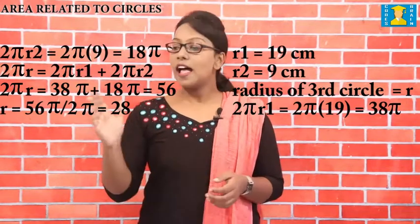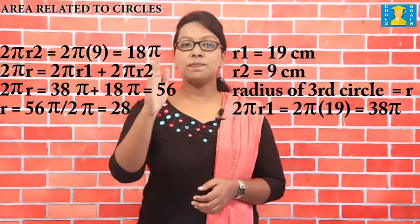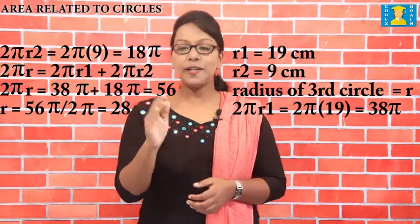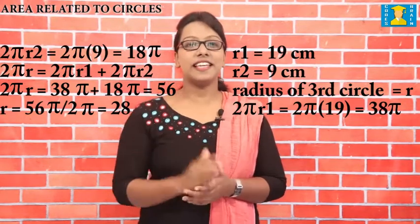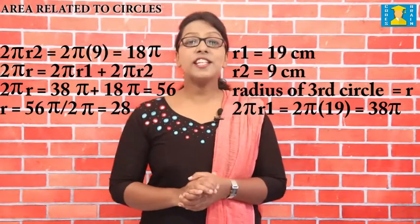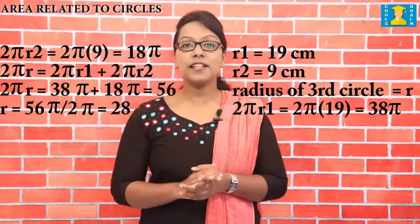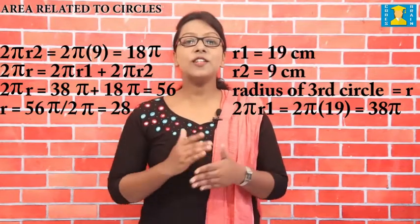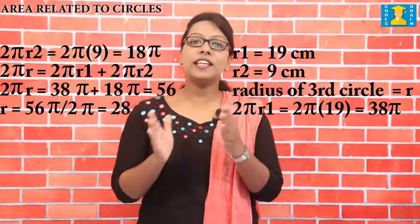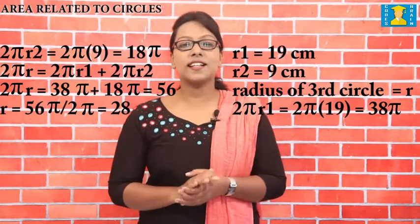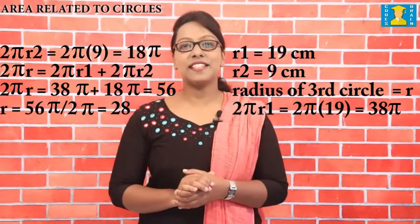So r equals 56π divided by 2π, which is 28. Therefore, the radius of the circle whose circumference equals the sum of the circumferences of the given two circles is 28 cm.